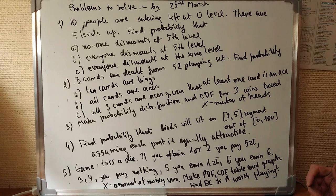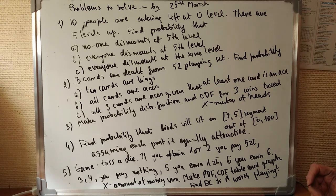Question two. Three cards are dealt from 52 playing set. Find probability that: A, two cards are kings; B, all cards are aces; C, all three cards are aces given that, or under the condition that, at least one card is an ace.